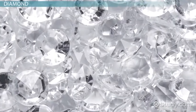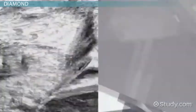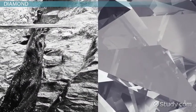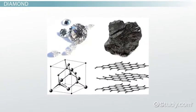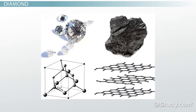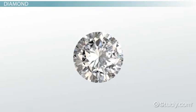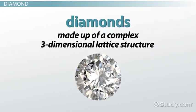Believe it or not, diamonds are another allotrope of carbon. You may be wondering how it is possible for graphite and diamonds to be made of the same thing, but it is entirely possible because their different structures give them different properties. Whereas graphite is formed using flat sheets of carbon atoms, diamonds are made up of a complex three-dimensional lattice structure that is responsible for the strength of diamonds.